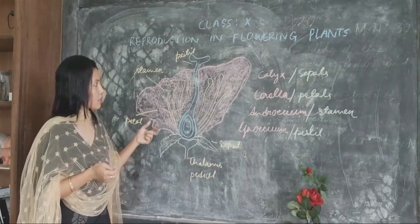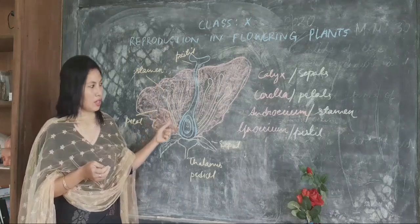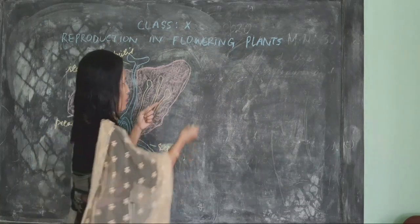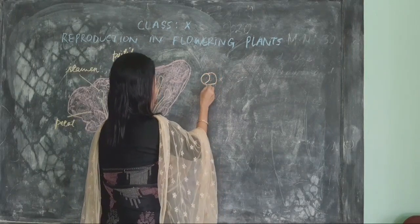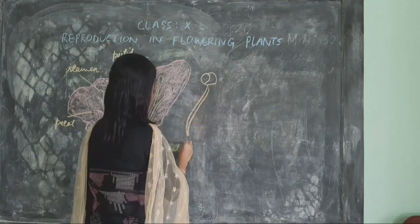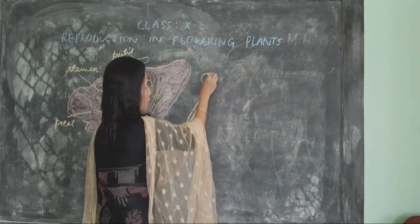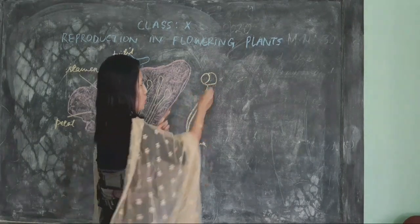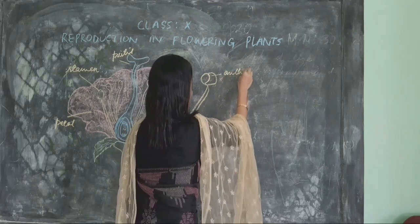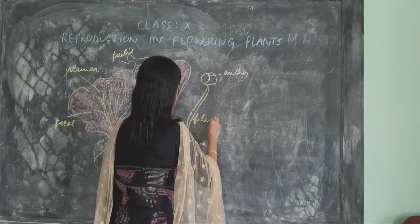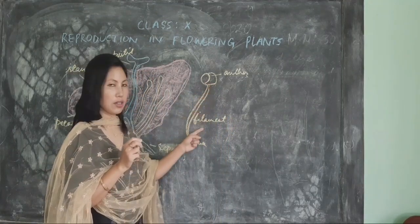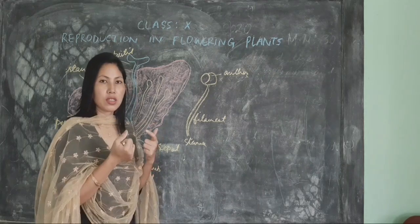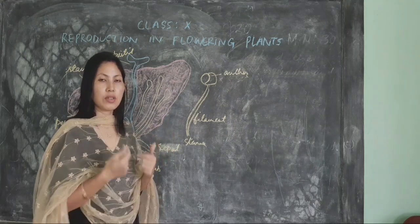Now let us discuss how the pistil and stamen help in reproduction by looking at their structure. The stamen is a bilobed structure with a filament. It is made up of two lobes attached together where the pollen grains are formed. This upper part is known as the anther and the stalk is known as the filament. Upon germination of the pollen grain on a stigma, it will release the male gamete.